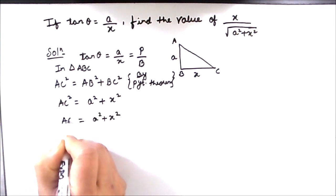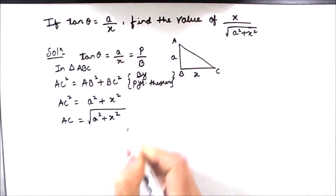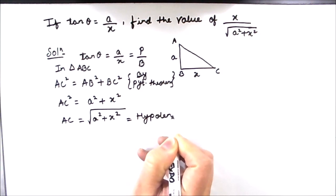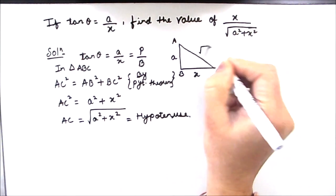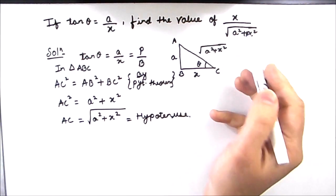Now AC will be equal to square root of a square plus x square. This is also the hypotenuse. We got the value of hypotenuse as square root of a square plus x square.